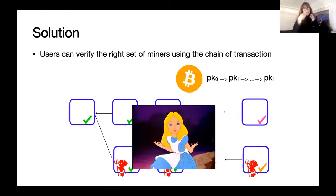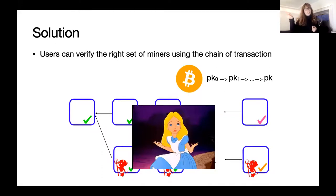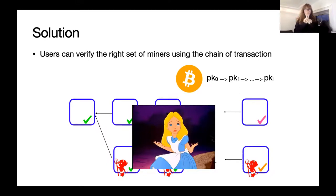By doing this, any user who goes offline and wakes up can follow the chain of transactions on the Bitcoin blockchain and differentiate whether it's the pink or the orange validators that are correct, and thus determine which chain is the right one.